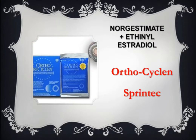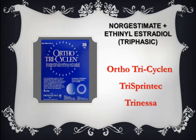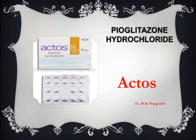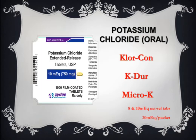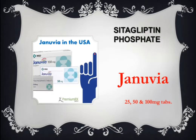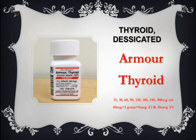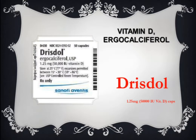Norgestimate and ethinyl estradiol, trade names: Ortho-Cyclen and Sprintec. Norgestimate with ethinyl estradiol triphasic, trade names: Ortho Tri-Cyclen, Tri-Sprintec, and Trinessa. Pioglitazone hydrochloride, trade name: Actos. Potassium chloride oral, trade names: Klor-Con, K-Dur, and Micro-K. Sitagliptin phosphate has trade name of Januvia. Desiccated thyroid has trade name of Armour Thyroid. Vitamin D ergocalciferol, trade name: Drisdol.